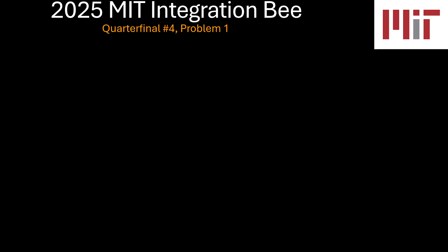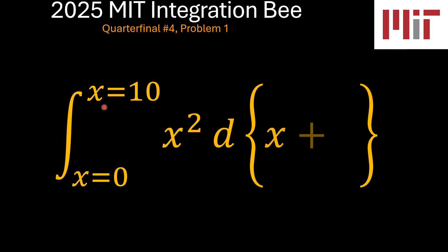Let's focus on the first problem of the 2025 MIT Integration Bee quarterfinal number 4, which is the definite integral from x equals 0 to x equals 10 of x squared, with the small change being in terms of the fractional part of x plus one-half.